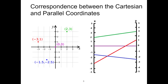Correspondence between the Cartesian and parallel coordinates. Now, we are going to describe the correspondence between the Cartesian and parallel coordinates plot and how a point corresponds to an edge on the parallel coordinates. For example, the corresponding edge of the point at minus 3 and 1 is drawn as starting from minus 3 on the x-axis and ending at 1 on the y-axis in the parallel coordinates. We can follow the same corresponding edge construction process for the other points.